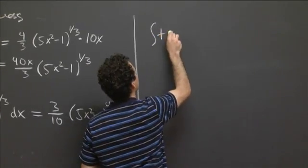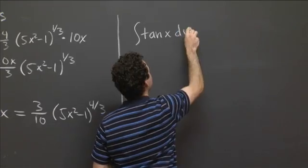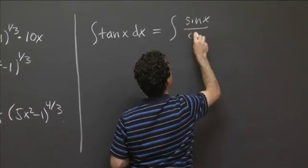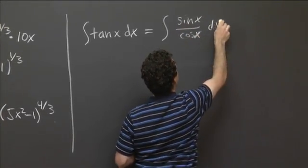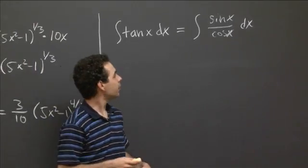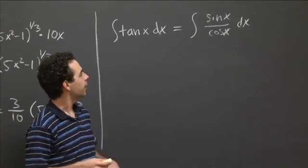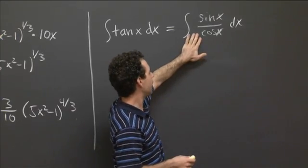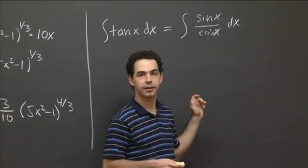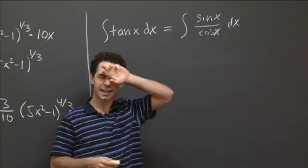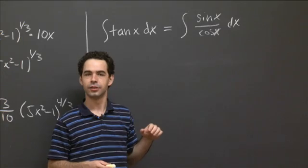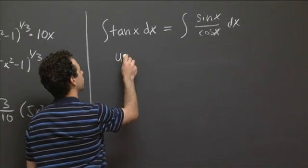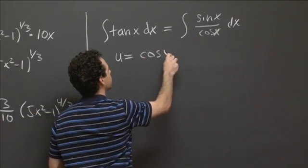So we can rewrite the antiderivative of tan x dx as the integral sine x over cosine x dx. OK. So now what do we see? So I see in the denominator a cosine of x, and then up top I have a sine x dx. So sine x dx, that's really close to the differential of cosine of x. So I'm going to try this substitution then. I'm going to try the substitution u equals cosine x.